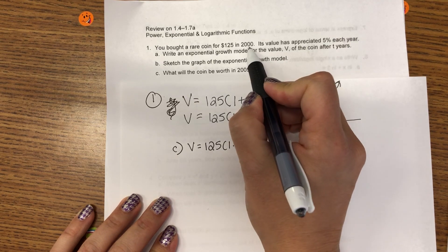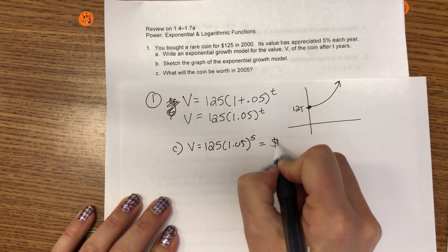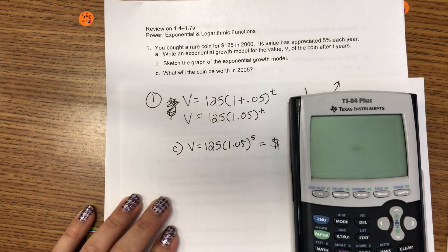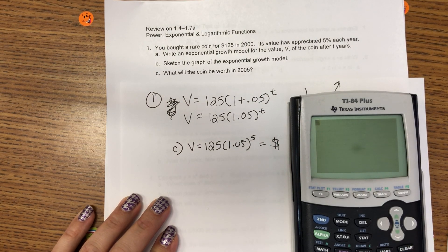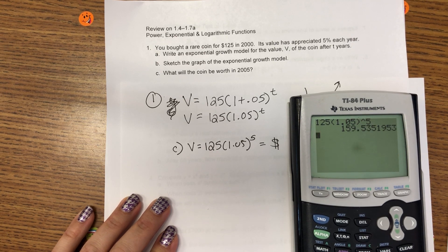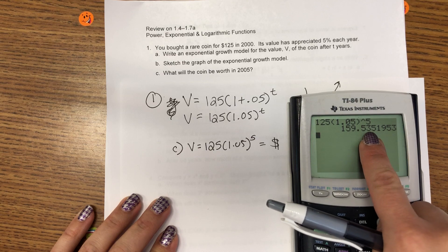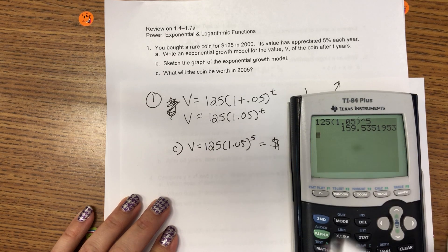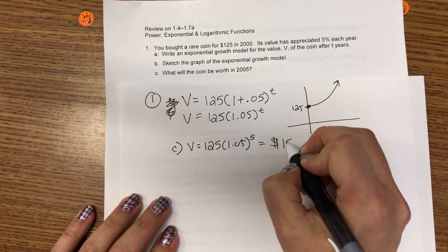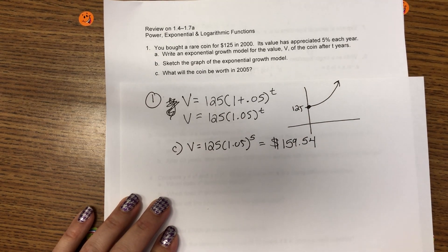How much will it be worth in 2005? Well, since 2000 was the initial year, 2005 is five years later. So, $159.54. You have to round that appropriately. Make sure to round your money. Alright, number one.